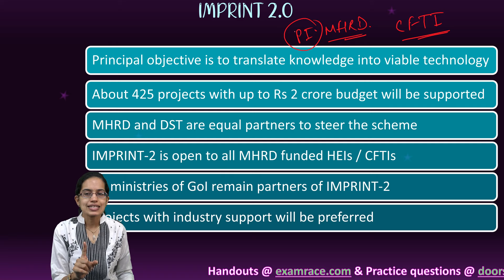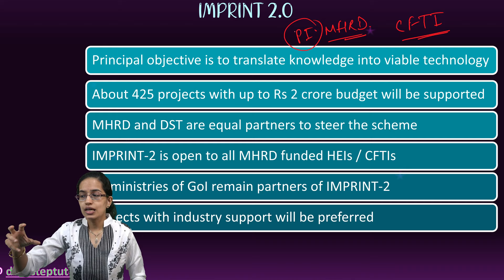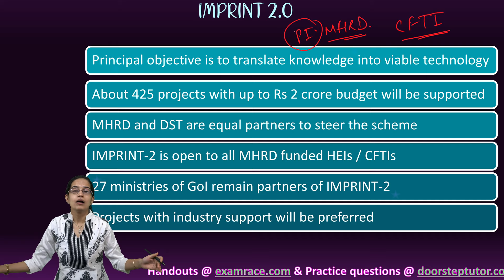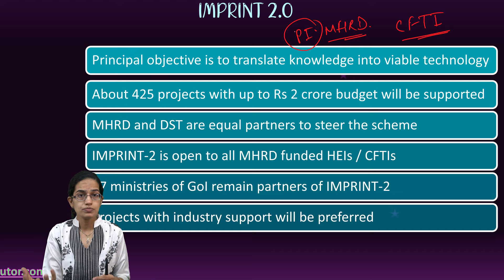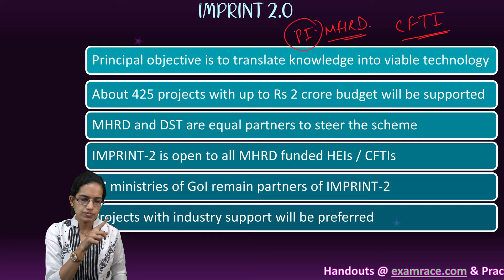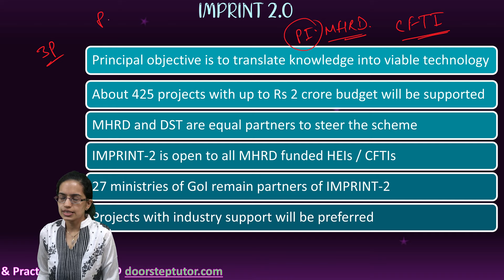Translational research, similar to the STARS scheme released by IASc, means research that is directly applicable to ground realities. The focus is to make research implementable — bridging the gap between research and practical implementation. It is India-centric research, addressing real problems in various regions through viable technology, encompassing the 3Ps: product, process, and prototype.